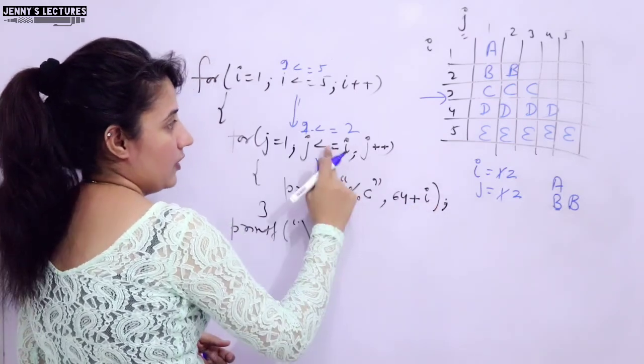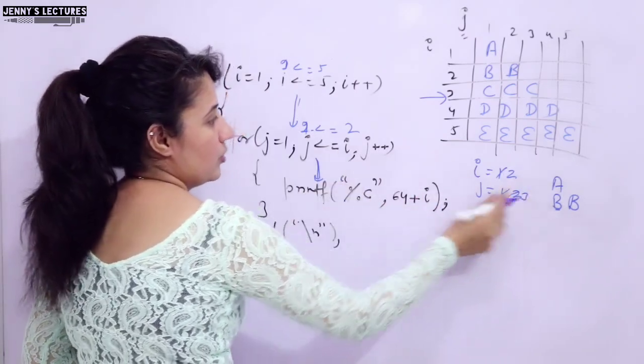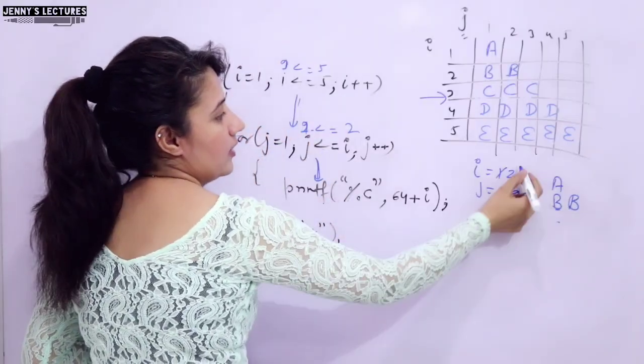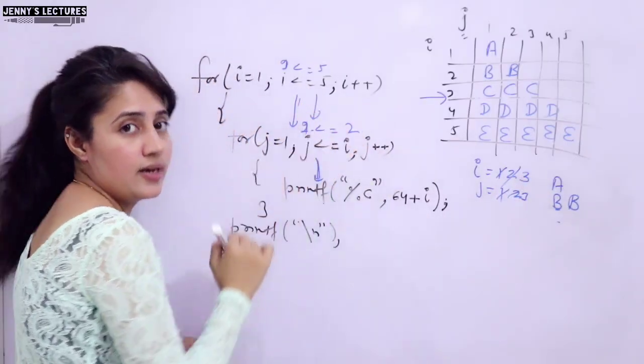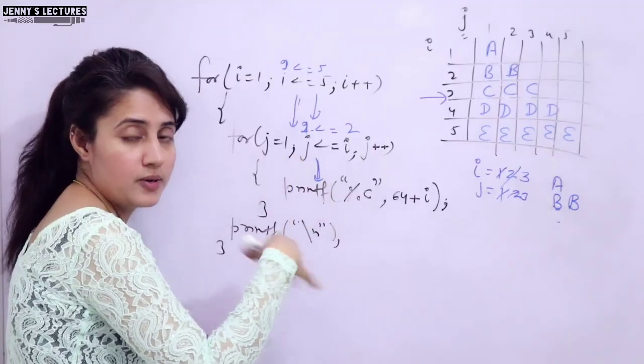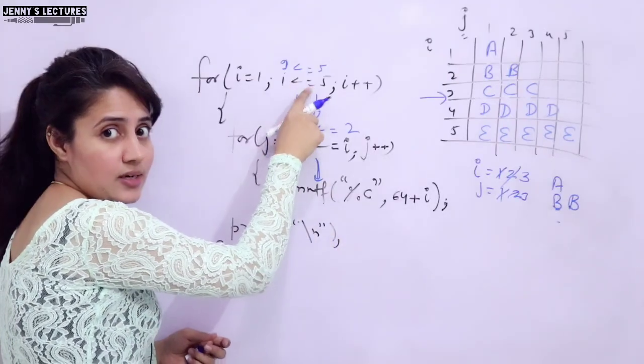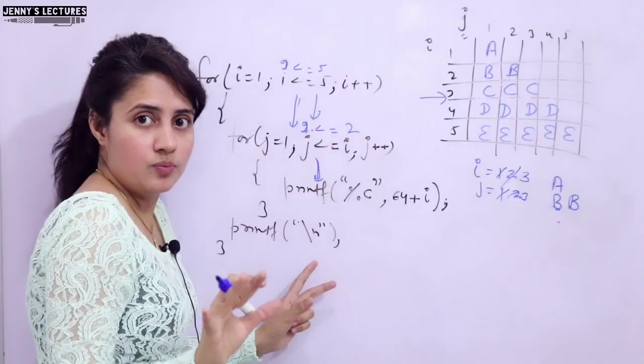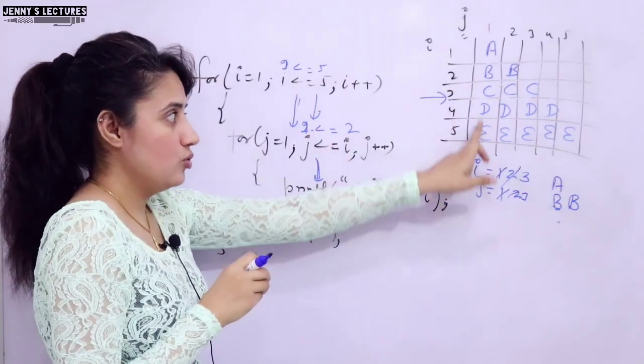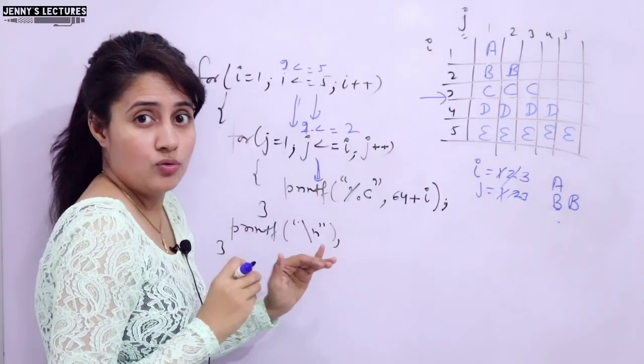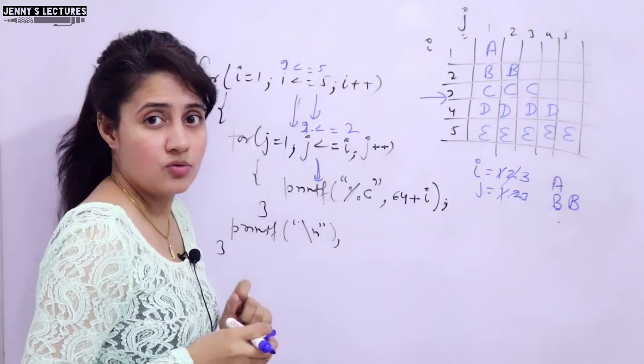J value is 2, again B would be printed. J value is 3, not condition true, exit from the loop. And in the new line. i++, i becomes 3. Condition true, will again enter here and this process would be repeated how many times? 5 times. When i value becomes 6, condition not true, exit from the outer loop. And 5 rows would be printed here. I hope you got it. Let me show you the output on my laptop using VS Code Editor.